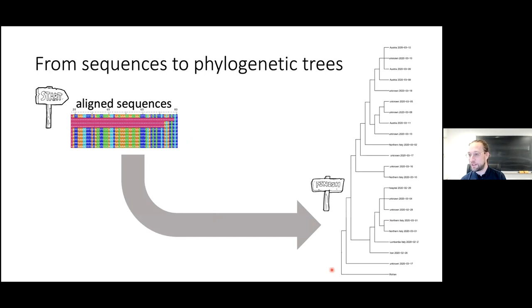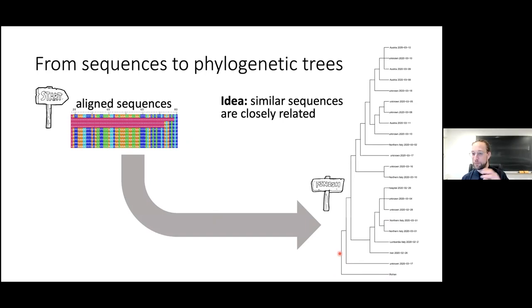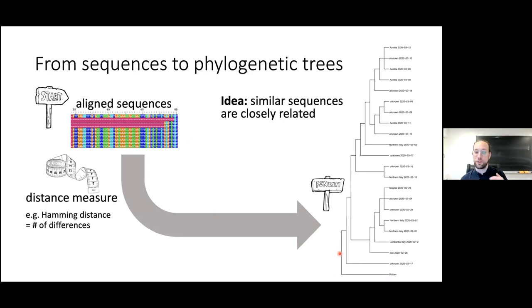Then you build a phylogenetic tree. Here you see a tree from the beginning of the epidemic — it came into Europe from northern Italy or via Austria to Denmark, and the root of the tree is placed at the Wuhan sequence. Similar sequences are closely related, so the tree-building process starts by computing a Hamming distance matrix and clustering sequences together. There is software available for doing that.